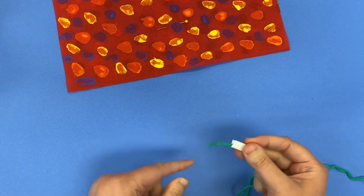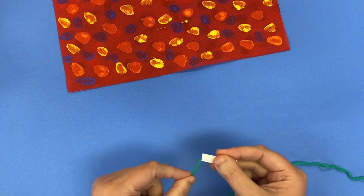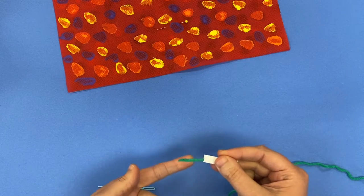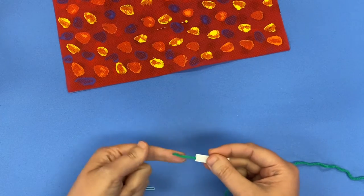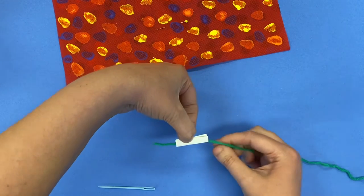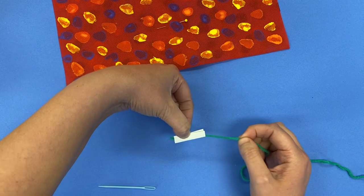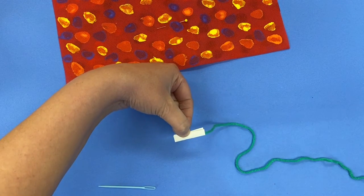Now if your yarn is coming out the end like that, it's not going to work very good. So if it's like that, you're just going to pinch the top of the hot dog bun, and pull your yarn until it's inside.